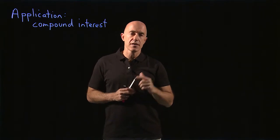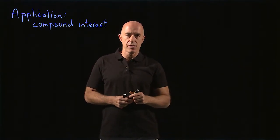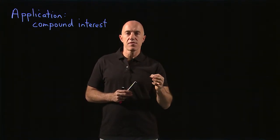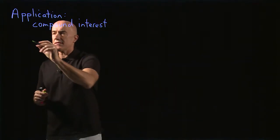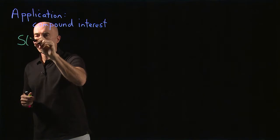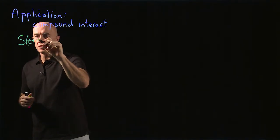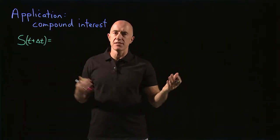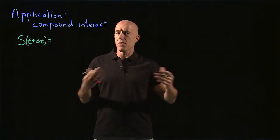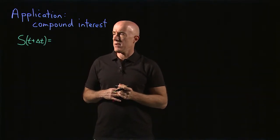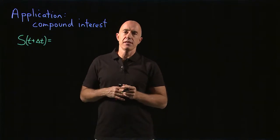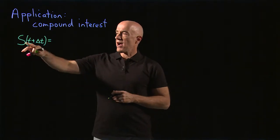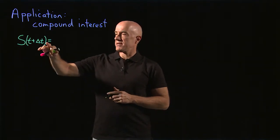We want to calculate how much money we have at some arbitrary time. We start at time t with the amount of money s of t, and we ask how much money do we have in the bank account at a time t plus delta t. You can view t as now, and delta t as one month from now — so if t is in units of years, delta t would be one twelfth of a year.